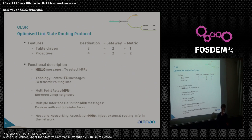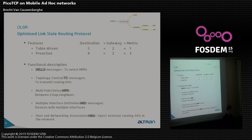Functionally, each node has the same intelligence and sends hello messages to all neighbor nodes. Those neighbors connect to others and select one of their neighbors as a multi-point relay, which sends topology information via TC messages to the rest of the network. There are also MID messages, which send interface data to the network, and HNI messages to inject new routing information from another network.